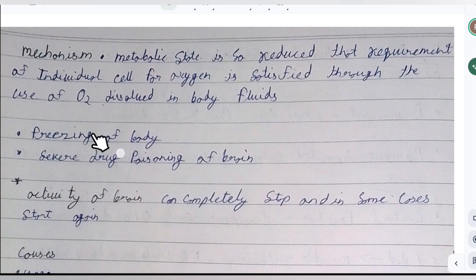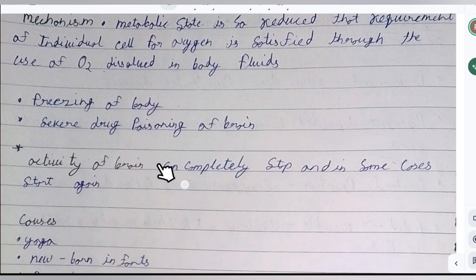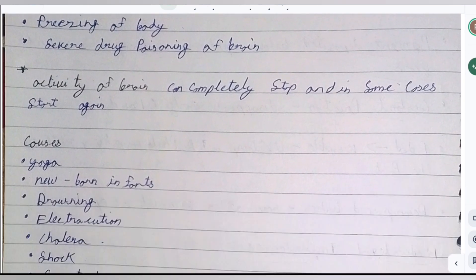In cases of freezing of body and severe drug poisoning of brain, activity of brain can completely stop and in some cases start again. Now what are the causes of suspended animation?